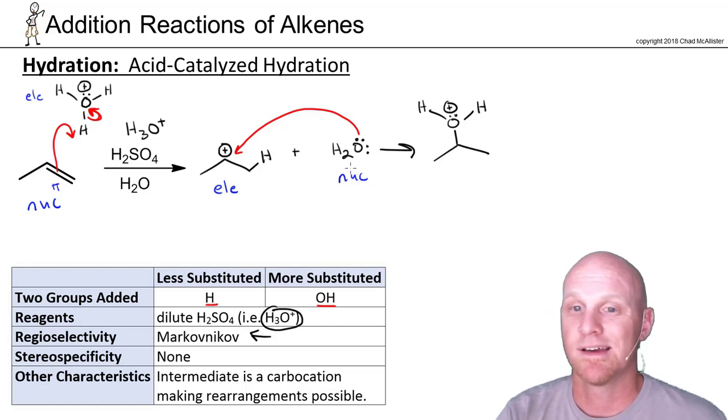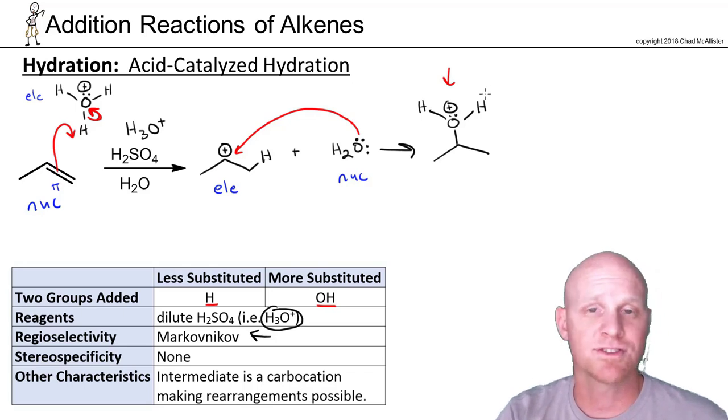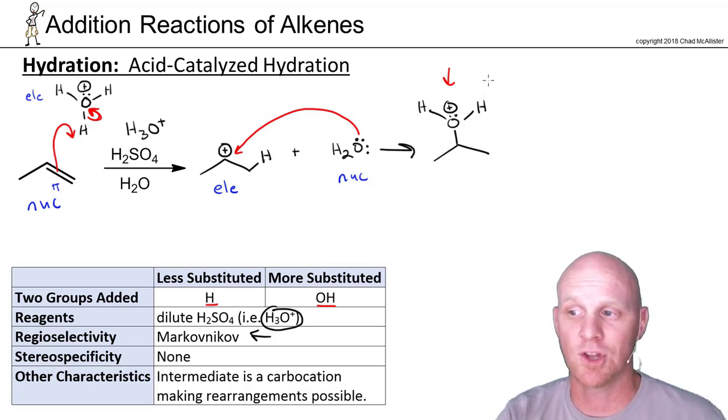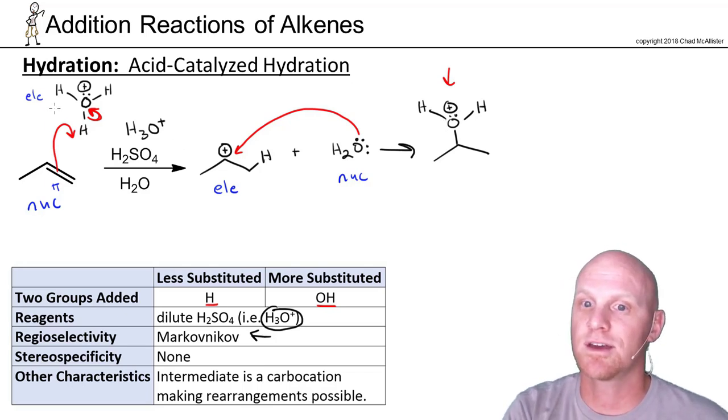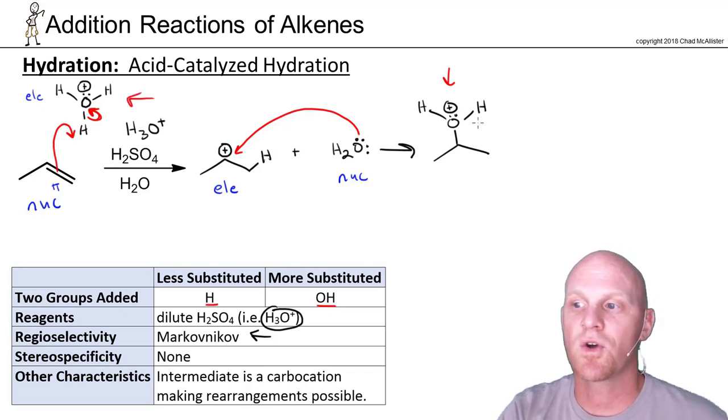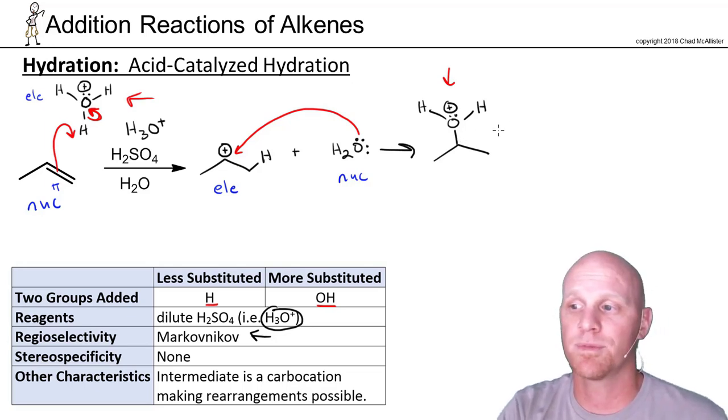And good, we've got two steps complete. We should note we are not done. If you look at what's termed actually an intermediate, this is not your product at this point. It's just an intermediate along the way to our product. You see an oxygen with three bonds and a plus charge, just like H3O+ over here. This thing is a strong acid, and you are never going to finish off a reaction with an oxygen with three bonds and a plus charge.